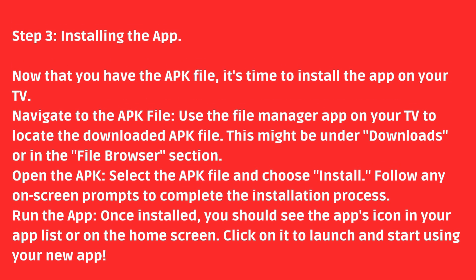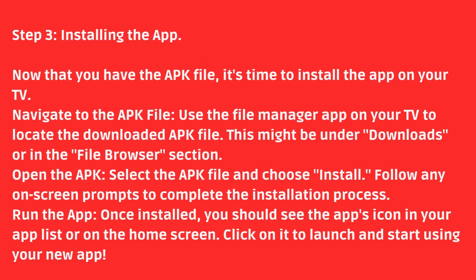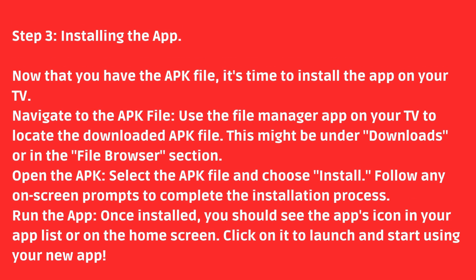Step 3: Installing the App. Now that you have the APK file, it's time to install the app on your TV. Use the File Manager app on your TV to locate the downloaded APK file — this might be under Downloads or in the File Browser section. Select the APK file and choose Install. Follow any on-screen prompts to complete the installation process. Once installed, you should see the app's icon in your app list or on the home screen. Click on it to launch and start using your new app.